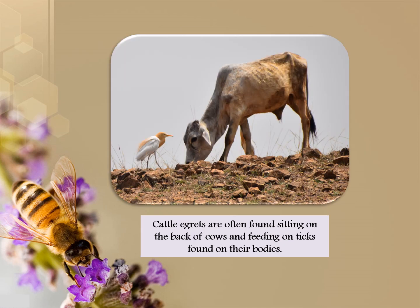Cattle egrets are often found sitting on the back of a cow and feeding on ticks found on their bodies.